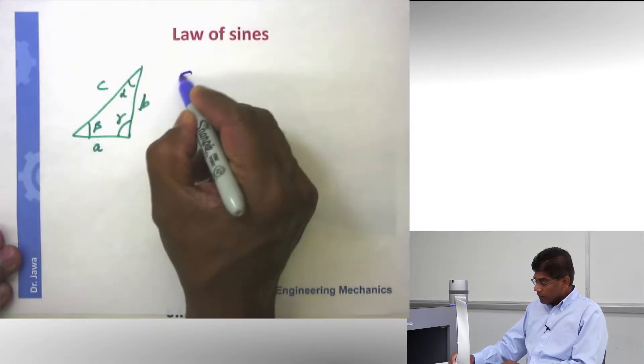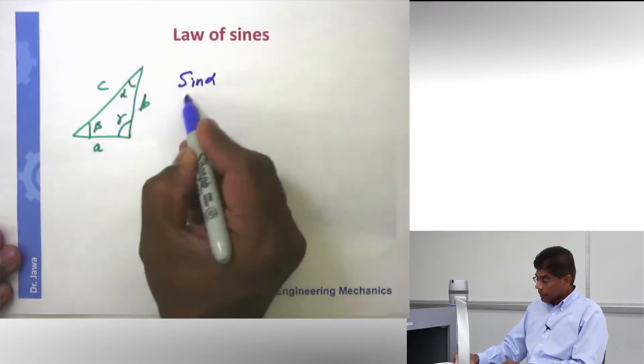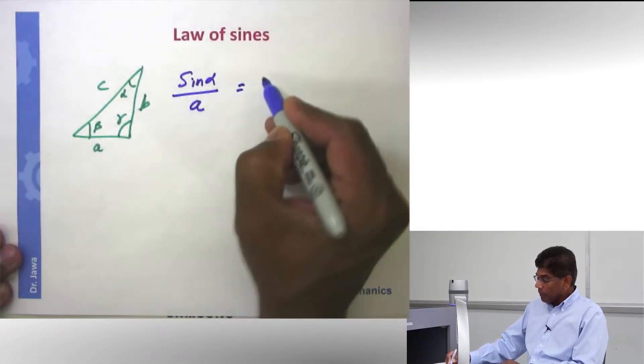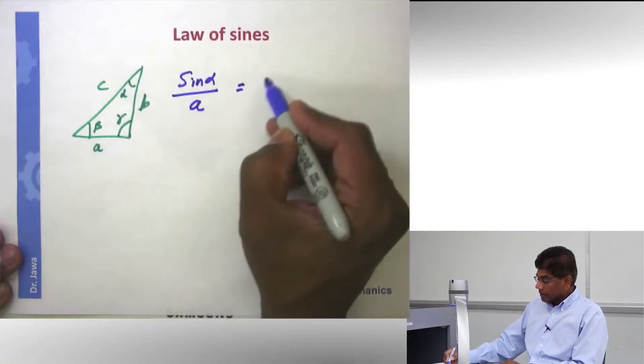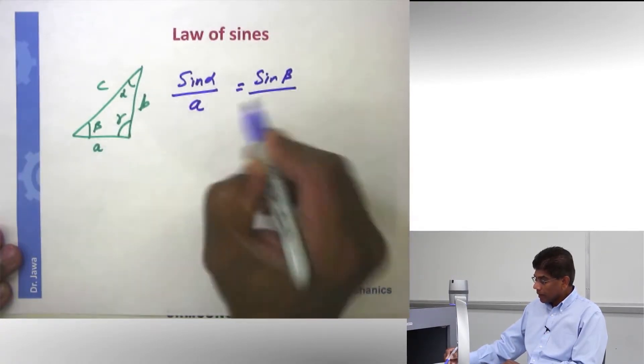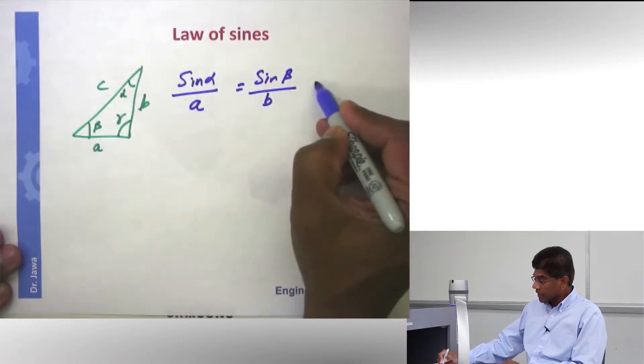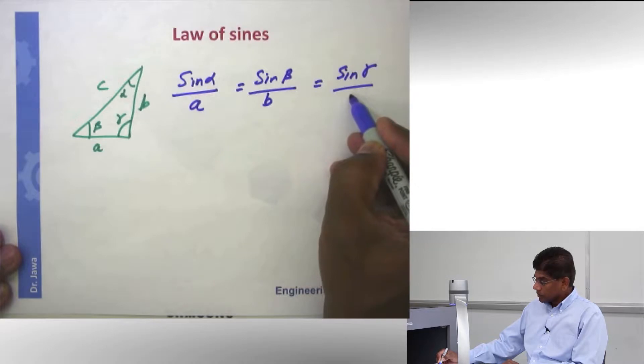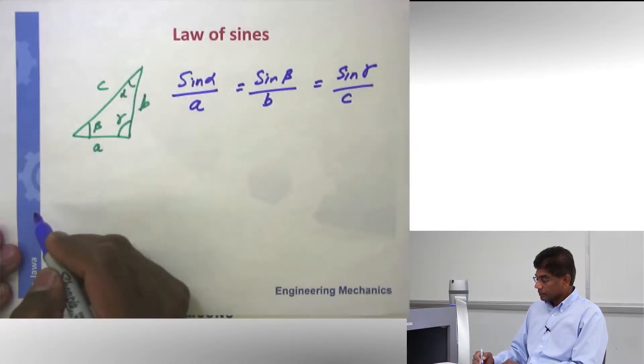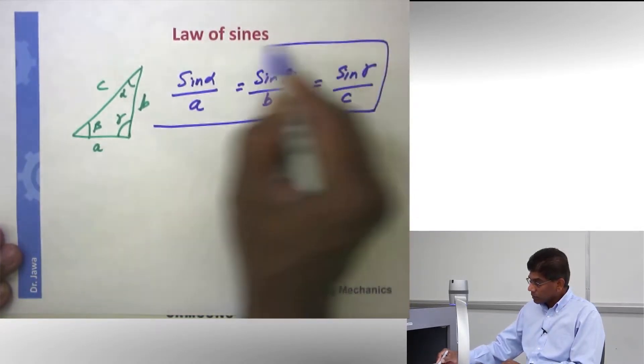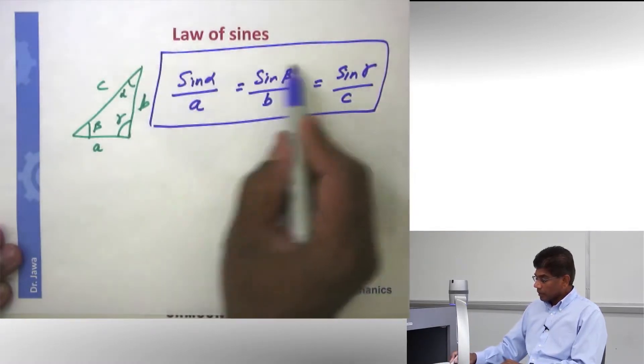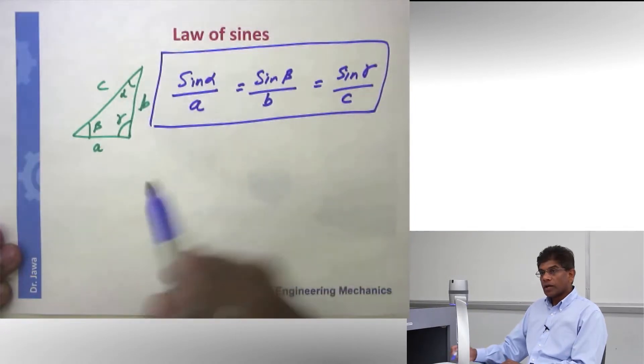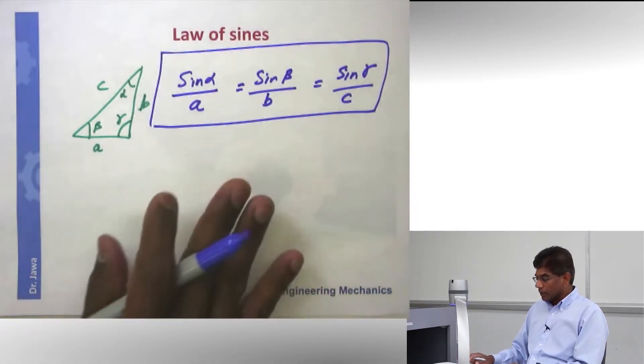And that would be sine alpha, which is this angle, over the side in front of it, opposite side A, would be equal to sine beta over the side B and sine gamma over the other side. Now if you look at this relationship, there are four quantities here, two angles and two sides at any time. And if you know three of them, you can find the other fourth. This is a very simple formula.